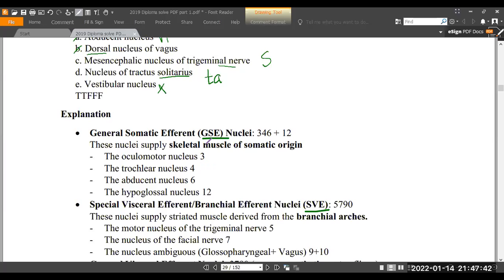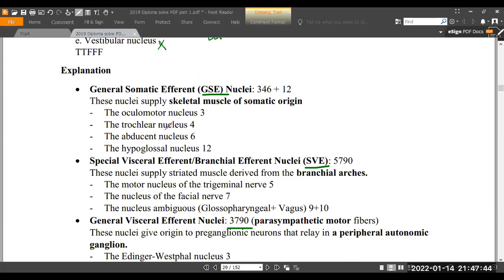Let's discuss this. First, the term GSE - General Somatic Efferent. So general somatic efferent - efferent obviously means motor. General somatic means it supplies skeletal muscle which are not from branchial arch, not from branchial arch.